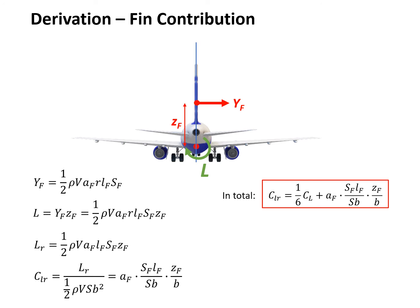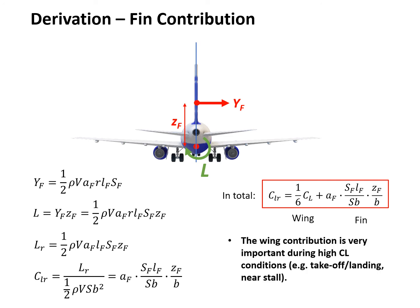Combining the wing contribution and the fin contribution gives the total CLR. For the rectangular wing, the first component is the wing contribution and the second is the fin contribution. The wing contribution is especially important during high CL conditions such as takeoff, landing, and when the aircraft is near the stall. This completes the derivation for CLR — the rolling moment change due to rate of yaw.